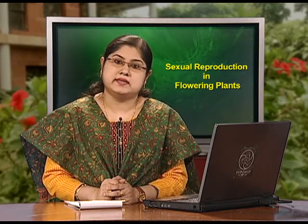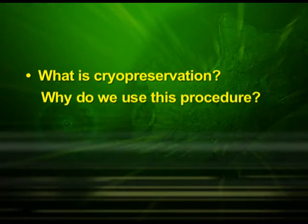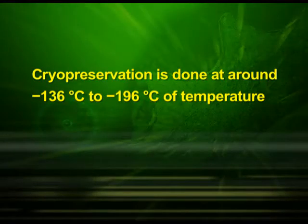The next point posed for thinking was: what is cryopreservation and why do we use this procedure? Cryopreservation is a process where cells, whole tissues, or any other substances susceptible to damage caused by chemical reactivity or time are preserved by cooling to sub-zero temperatures. At low enough temperatures, any enzymatic or chemical activity which might cause damage to the material is effectively stopped. Cryopreservation is done at around minus 136 to minus 196 degrees centigrade. The preserved substances are used afterwards whenever required.